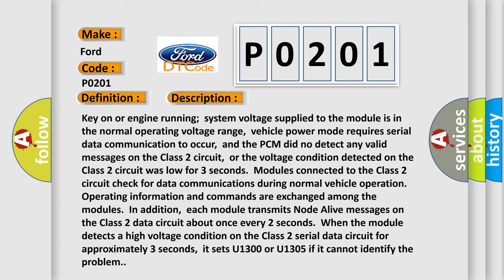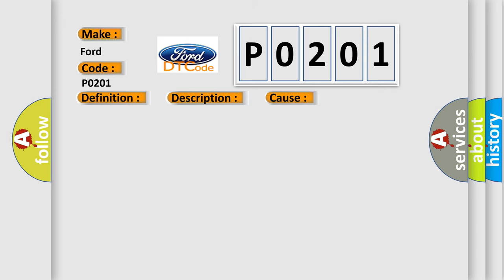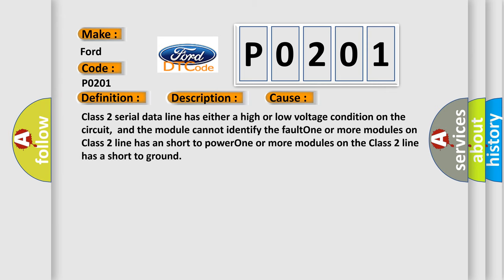This diagnostic error occurs most often in these cases: The Class 2 serial data line has either a high or low voltage condition on the circuit, and the module cannot identify the fault. One or more modules on the Class 2 line has a short to power. One or more modules on the Class 2 line has a short to ground.